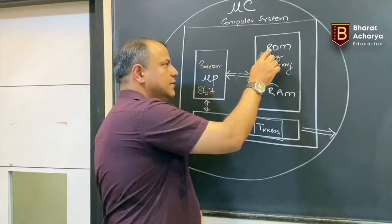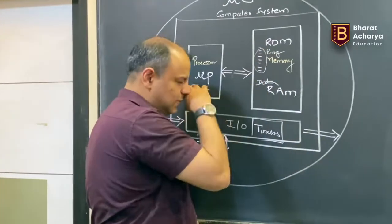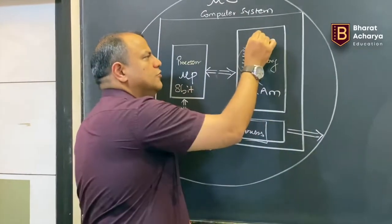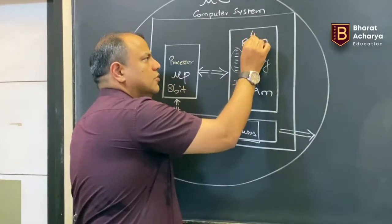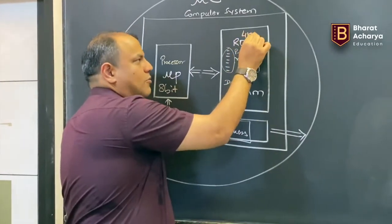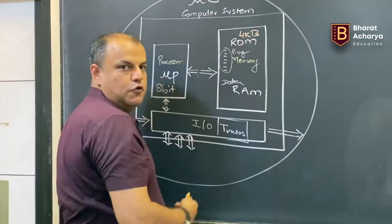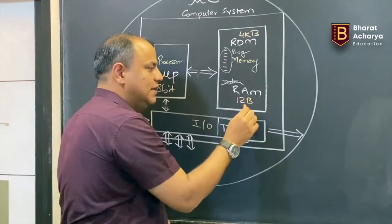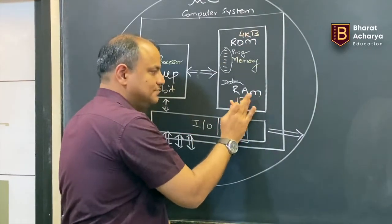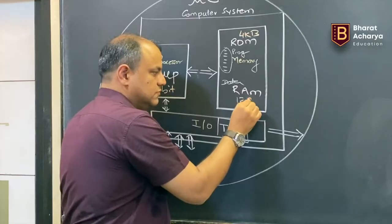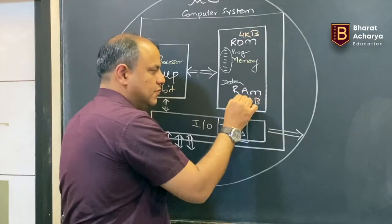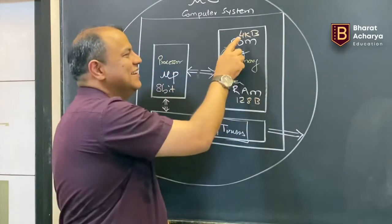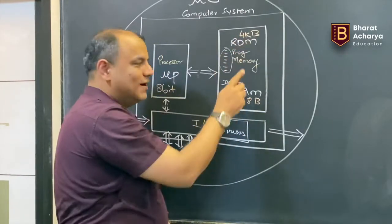The 8051 has internal memory in two forms: ROM and RAM. ROM is of size 4 KB and RAM is of size 128 bytes.